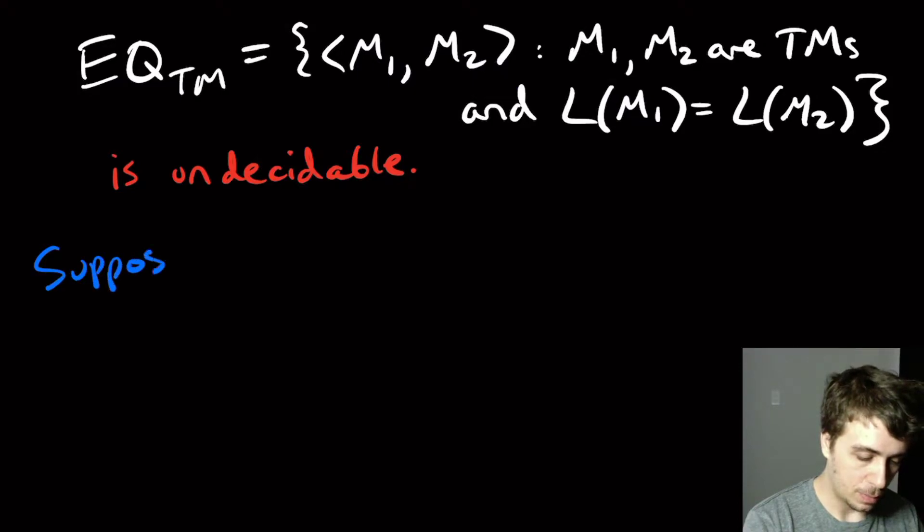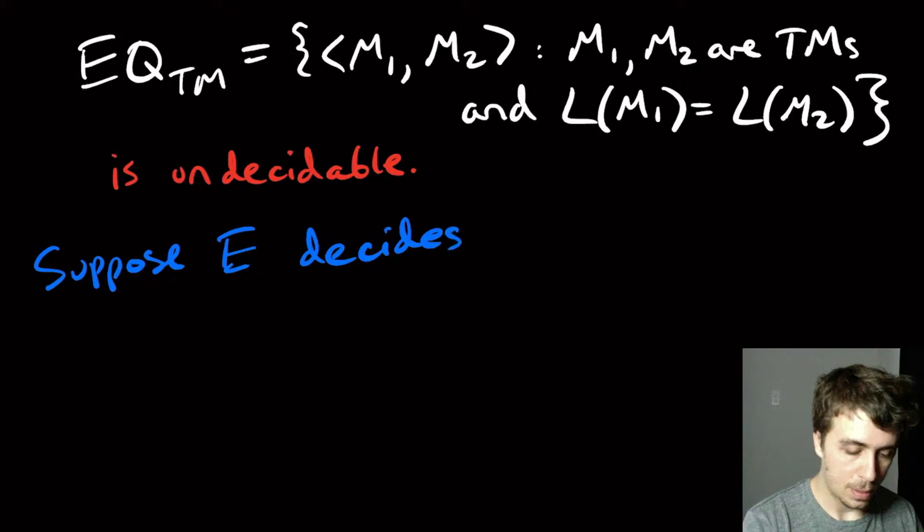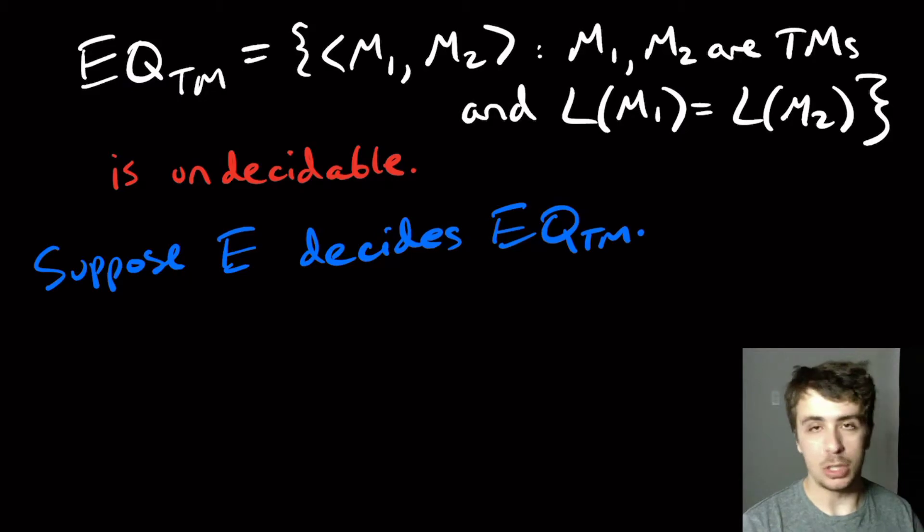So suppose that E decides EQTM. So E is a Turing machine I'm supposing exists that will, if you feed it two Turing machines, figure out whether they have the same language.